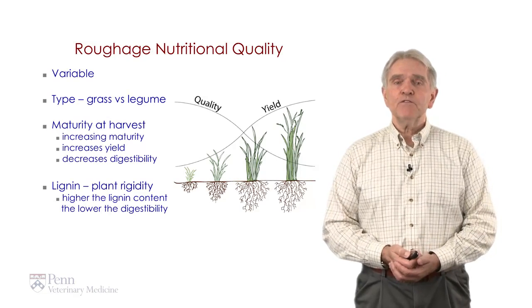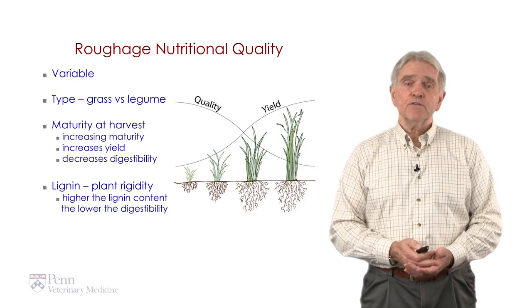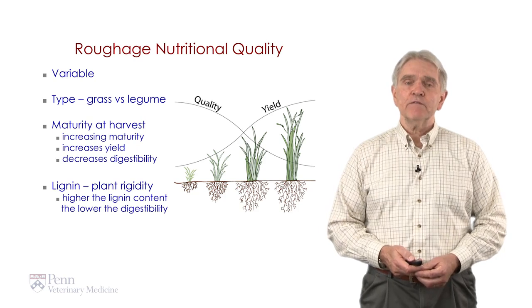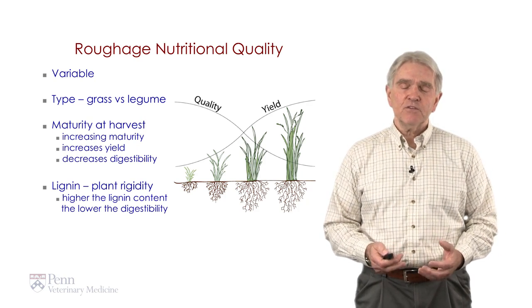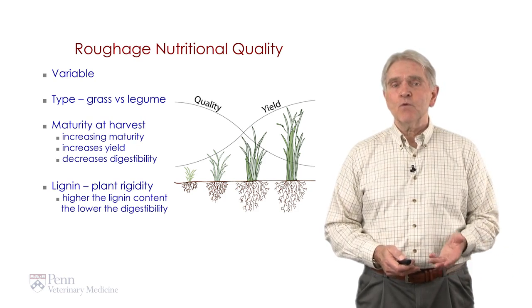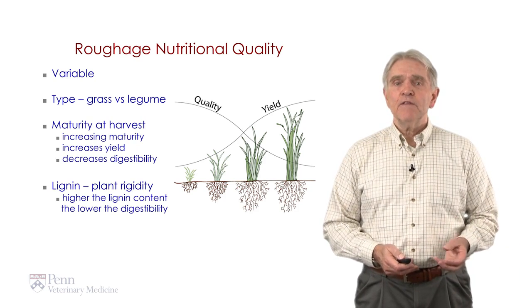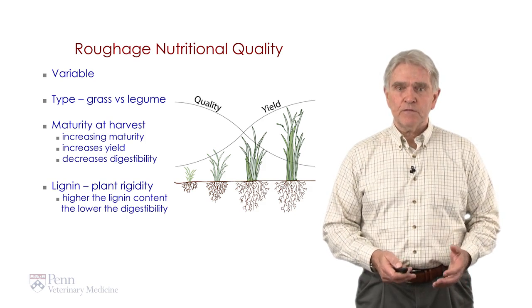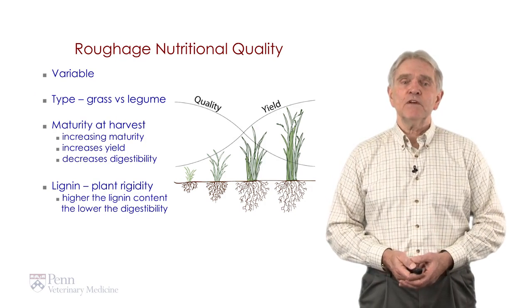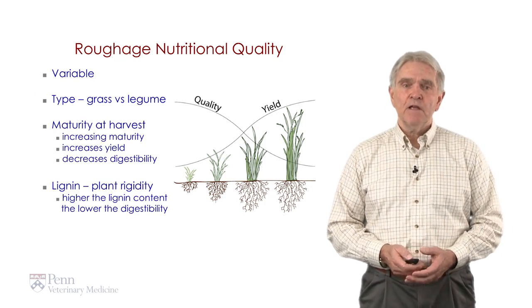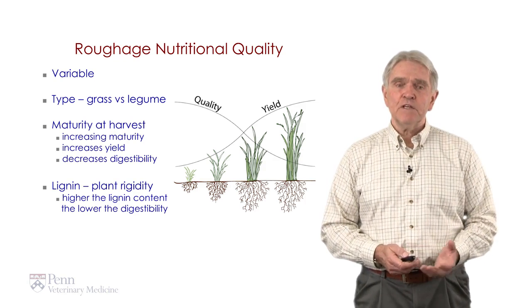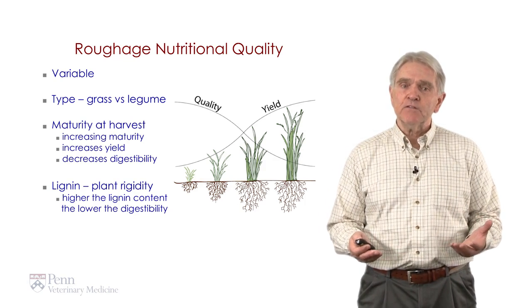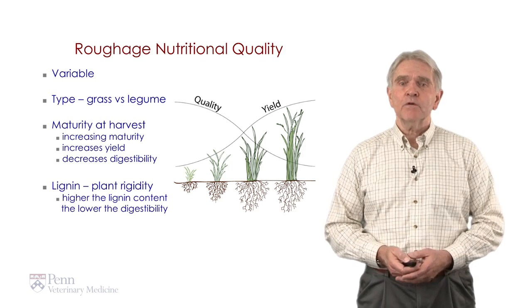The roughage nutritional quality varies. First, we have types: grass versus legumes. Second, maturity at harvest. One of the great tensions farmers have is that as they let grasses or legumes get more mature, yield increases but nutrient quality decreases. So there's an optimal yield-digestibility point at which they should harvest the plant. What makes the nutrient content decrease is that lignin increases as the plant matures — that gives the plant rigidity so it can stand up, but it also lowers the digestibility.